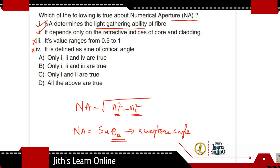The answer is: only statements 1 and 2 are true. Option C is the correct answer. Numerical aperture determines the light-gathering ability of the fiber, and it depends only on the refractive indices of the core and cladding. Identify the true statements and answer accordingly.